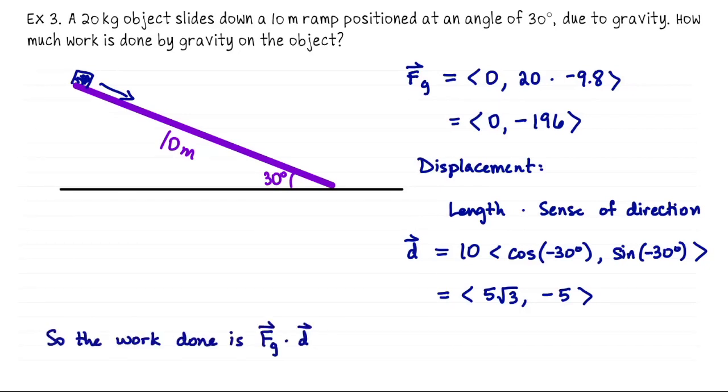So the work done by gravity is going to be the dot product of the force due to gravity together with the displacement. We take the dot product of zero, negative one hundred and ninety-six, and the vector five square root of three, negative five. The only thing that matters is how far gravity displaced it downwards. So overall we get that gravity did nine hundred and eighty joules of work.